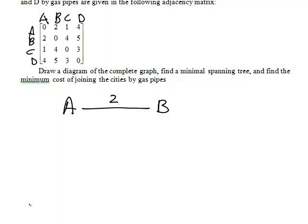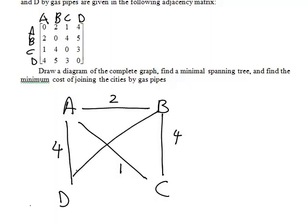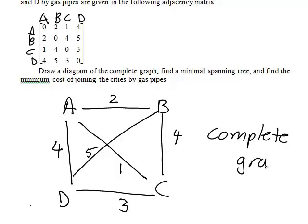We're then told that the cost of joining city A to city C is one million dollars. So I'd include city C and that link will be one. The cost of joining city A to city D is four million dollars. So that link will have a four. Then looking on the next line we've already connected cities B and A but the cost of joining city B to city C is four million dollars. The cost of joining city B to city D is five million dollars. So that link would have a five. And lastly the cost of joining city D to city C is three million dollars. So that link will have a three. So that is our first part. That is our complete graph showing how the cities are connected and the relevant costs.